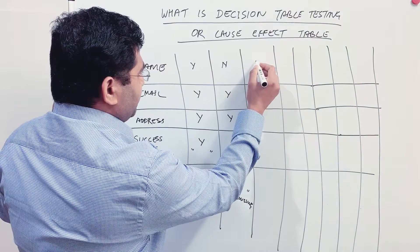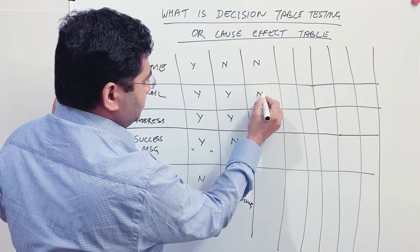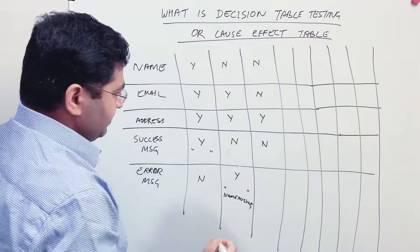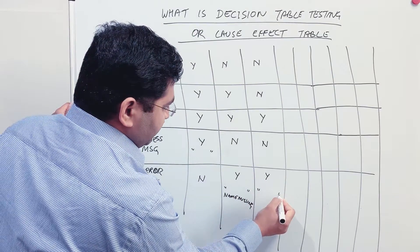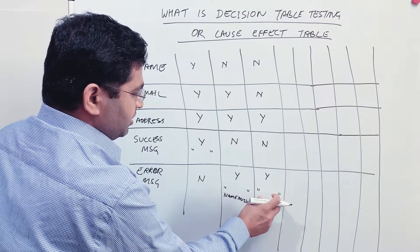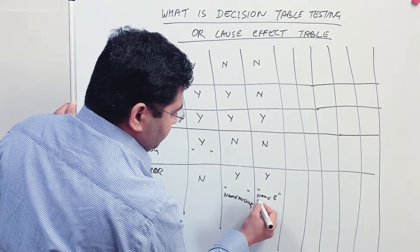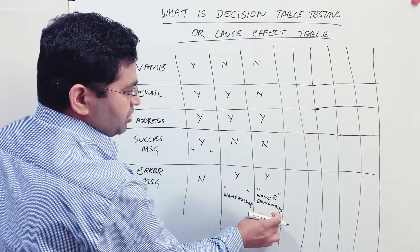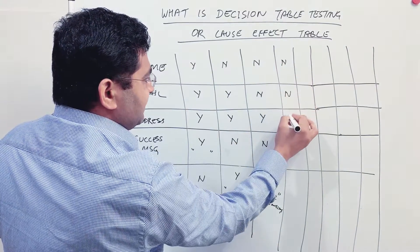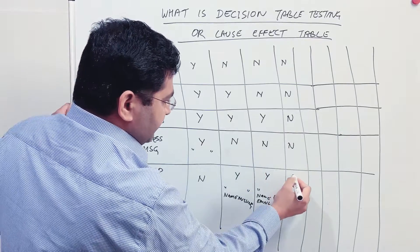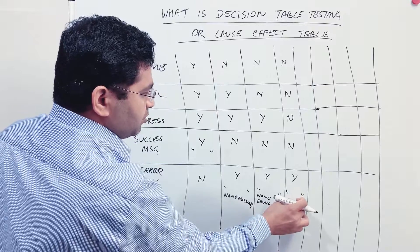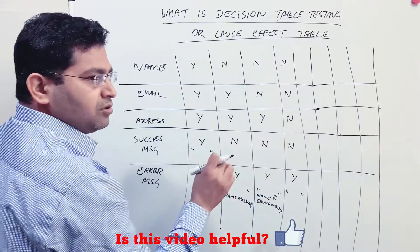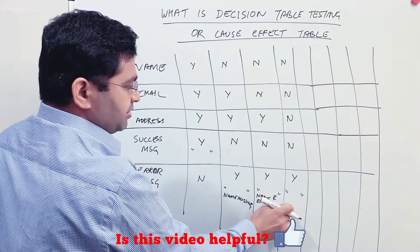In the next case, name is not present, email is not present, and address is present. Success message should not be displayed, error message should be displayed, and the exact message shown might be 'Name and email missing.' Similarly, if nothing is entered at all — success message: No, error message: Yes — and the message displayed would be something like 'Name, email, and address missing.' If a customer hasn't provided any details and clicks register, they should get that error.